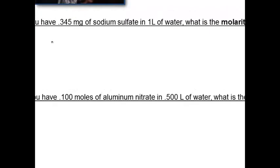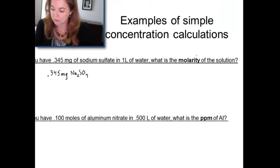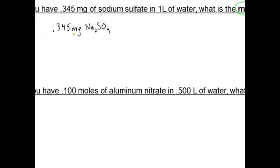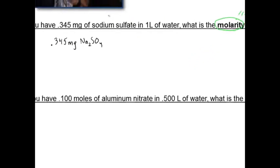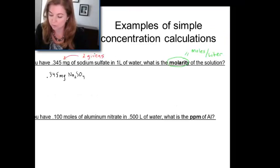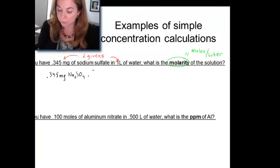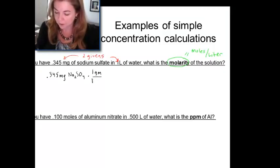Let's start this example by writing down our given: 345 milligrams of sodium sulfate, and we want to get to molarity, which is defined as moles per liter. So what I'm going to have to do in this calculation is go from milligrams to moles and divide by liters. This is an example where there are two givens: one is 0.345 grams, the other is the liter. The first thing we're going to do is get rid of the milligrams — we want to do everything in grams — so there's that conversion.